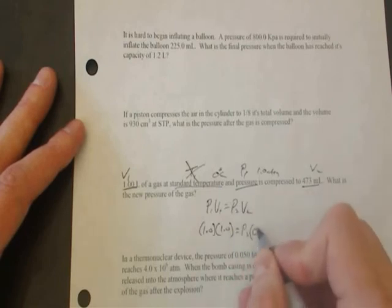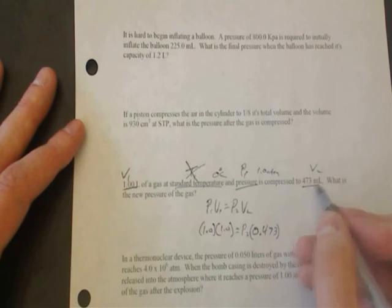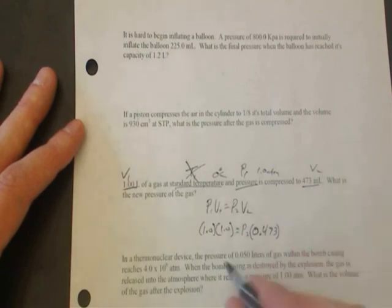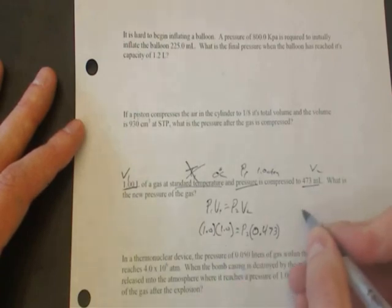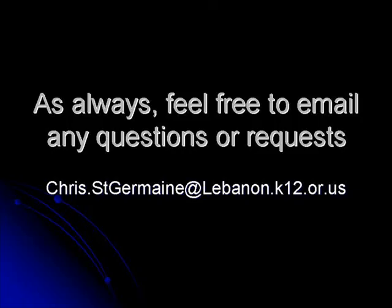And our second volume, we have to be in liters, so it's 0.473 liters, because it's 473 milliliters. You do all that math, and you'll get that your P2 equals 2.11 atmospheres. Thank you.